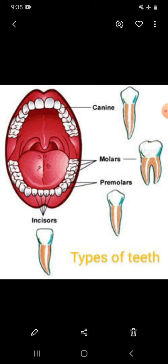First, incisors — also called cutting teeth. The four teeth on each jaw are called incisors. They have sharp edges. Incisors are used to cut food into small pieces. Second, canines — also called tearing teeth. These are two sharp